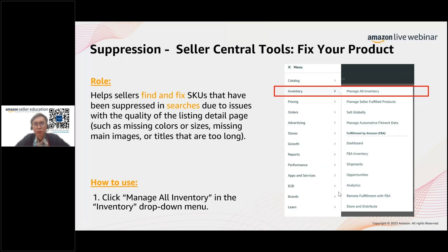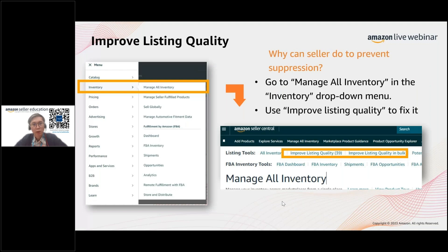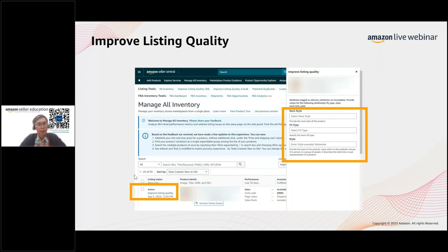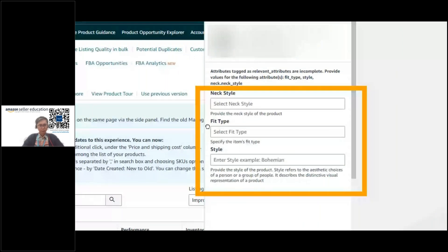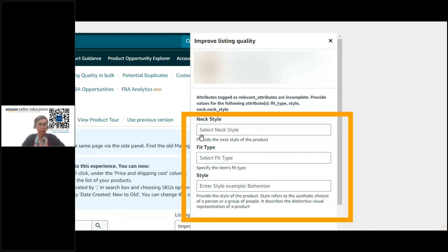I'm going to briefly cover some tools. In your Seller Central under Manage All Inventory, you should be able to see an option called 'Improve Listing Quality.' You can do this in bulk if you have many listings, or select individual ones. When you click on a product listing and choose 'Improve Listing Quality,' a side window will appear — it may look different depending on your product category.